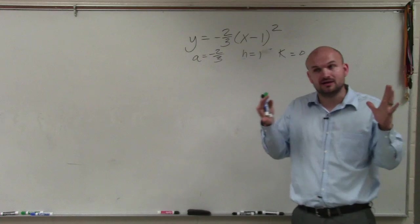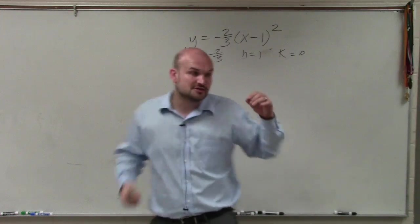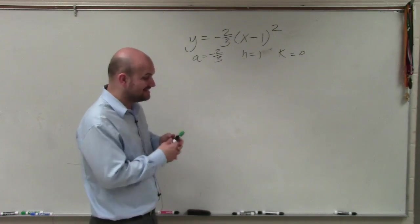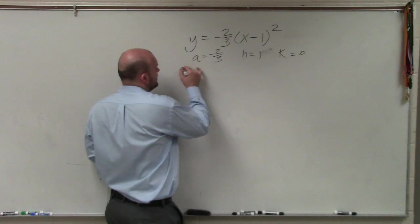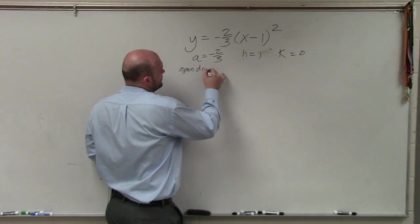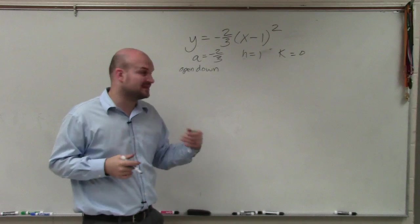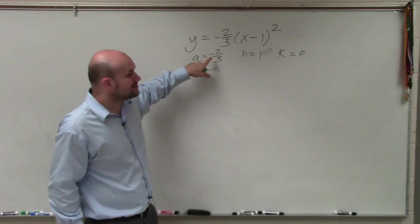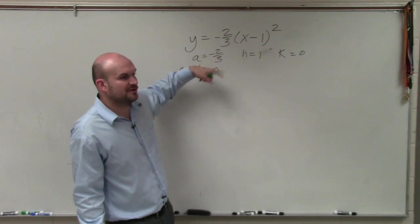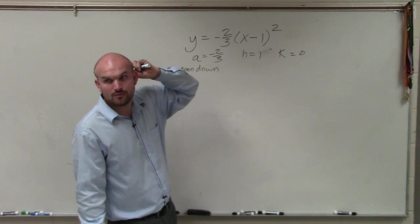It's going to be either stretched or compressed. And also, A is negative, so we know the graph is going to open down. It's going to be reflected over the x-axis. Is the absolute value of -2/3, which is just 2/3, less than 1 or greater than 1? Less than 1.